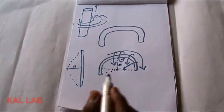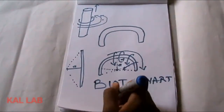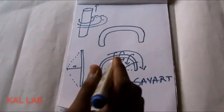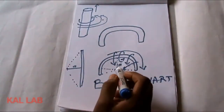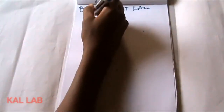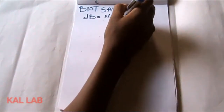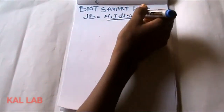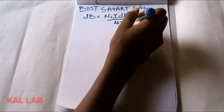So today we are going to use Biot-Savart Law to derive the equation to calculate the magnetic field that will be felt at the center of a semi-circular loop. By Biot-Savart Law, the law states that dB is equal to μ₀ I dl sin φ divided by 4π r².